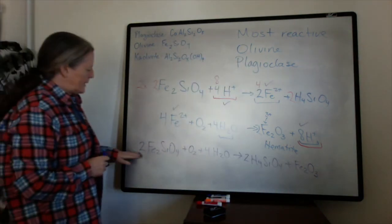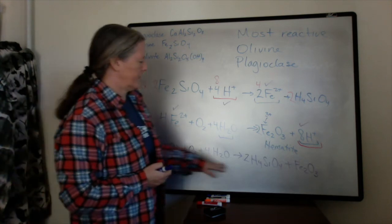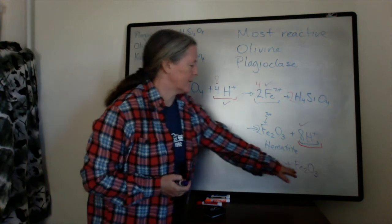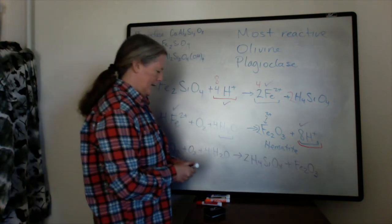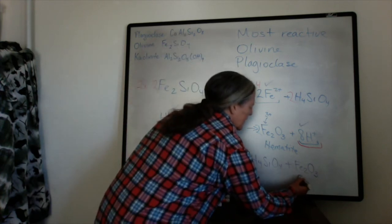So basically our olivine, when it's exposed to water and oxygen, goes into hydrated silica and hematite. Now again, this hematite is not a clay mineral, but it's often clay sized.